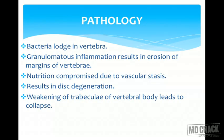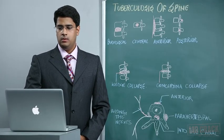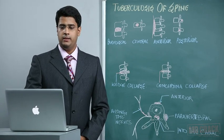The pathology of tuberculosis spine proceeds as follows: bacteria first lodge in the vertebrae causing granulomatous inflammation, resulting in erosion of the vertebral margins. Nutrition is then compromised because vascularity is hampered and there is vascular stasis. This results in disc degeneration, and finally weakening of the trabeculae of the vertebral body, leading to total collapse.